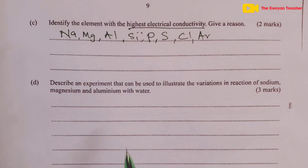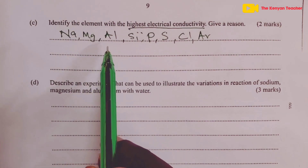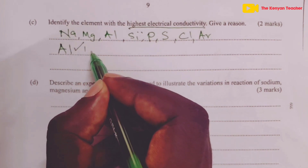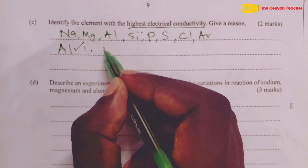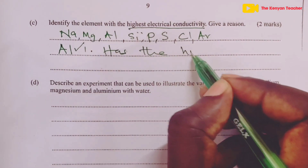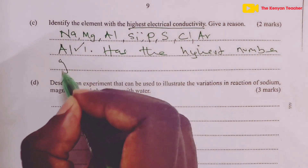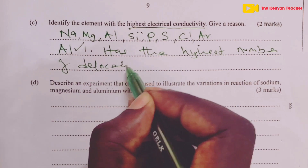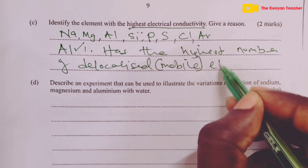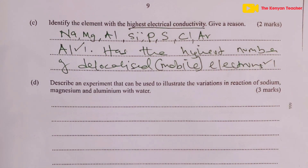Sodium has one delocalized electron, Magnesium has two, and Aluminium has three. So the answer is Aluminium, for the first mark. It has the highest number of delocalized — also called mobile — electrons, which earns the next mark.